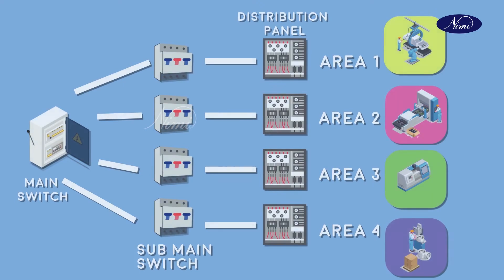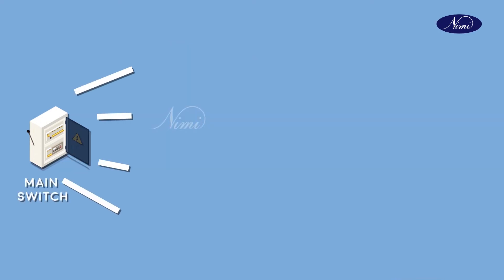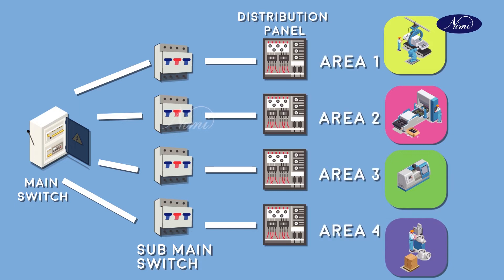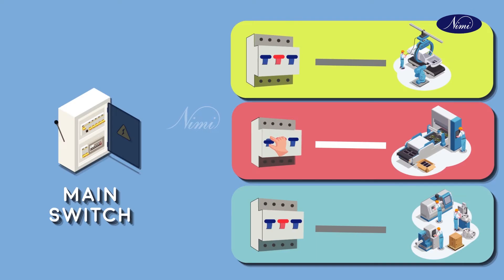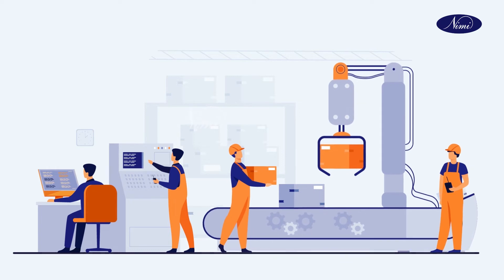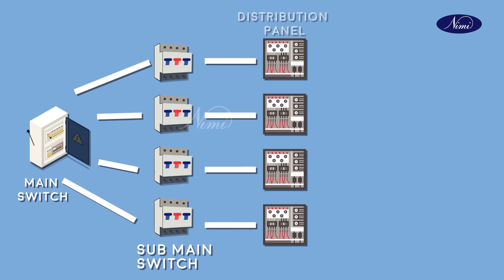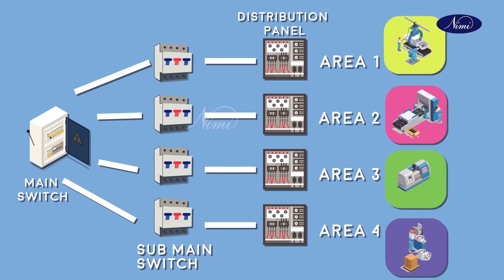This is a sample of a single line diagram of an electrical supply system in a workshop. In this there is a main switch and four sub-main switchers and their corresponding distribution board to control the electrical supply to a particular division. In case of any emergencies, the corresponding supply should be cut off without delay. In a well-organized workshop, the main switch, sub-main switchers and distribution boards will have clear marking to show their area of control.